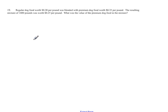Okay, the last word problem, number 19. Regular dog food worth 20 cents per pound was blended with premium dog food worth 35 cents per pound. The resulting mixture of 1,800 pounds was worth 25 cents per pound.